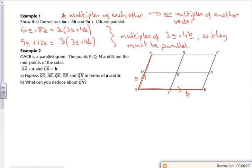So you've done these at school. It says express OC, AB, QC, CN, and QN in terms of a and b. So let's have a look at OC. I'm going to do some drawing on them so you can see. So OC is straight through the middle there.